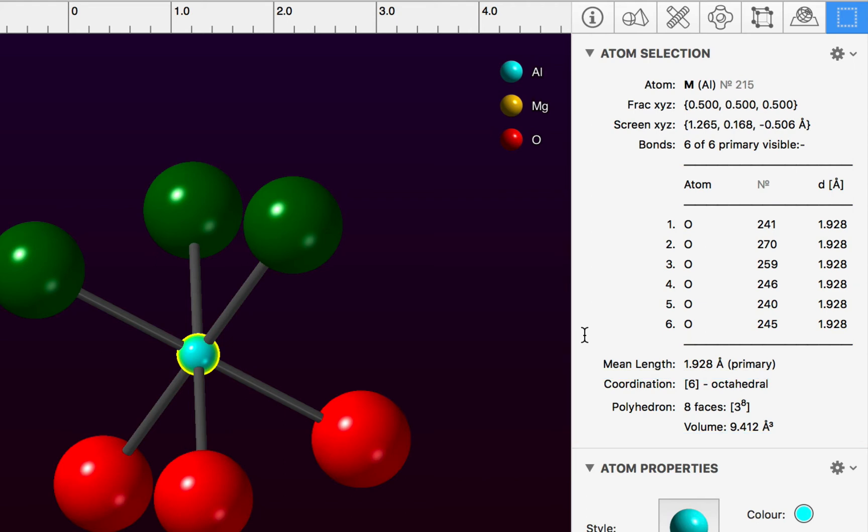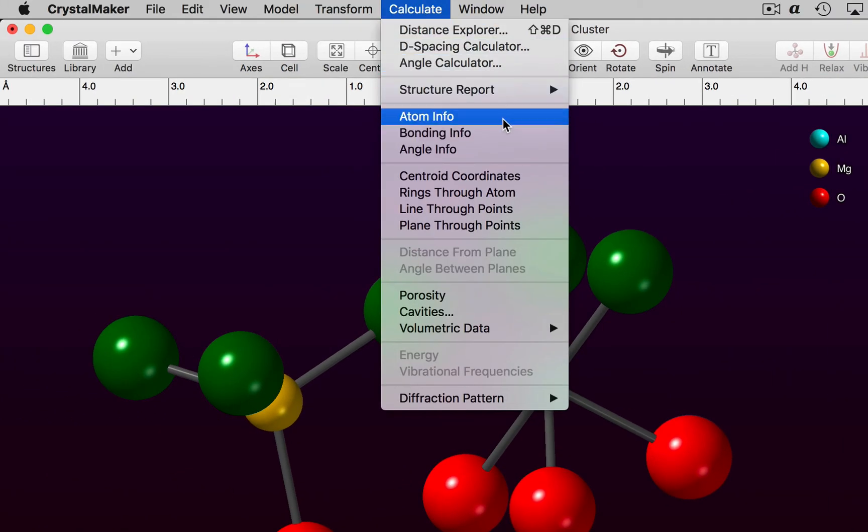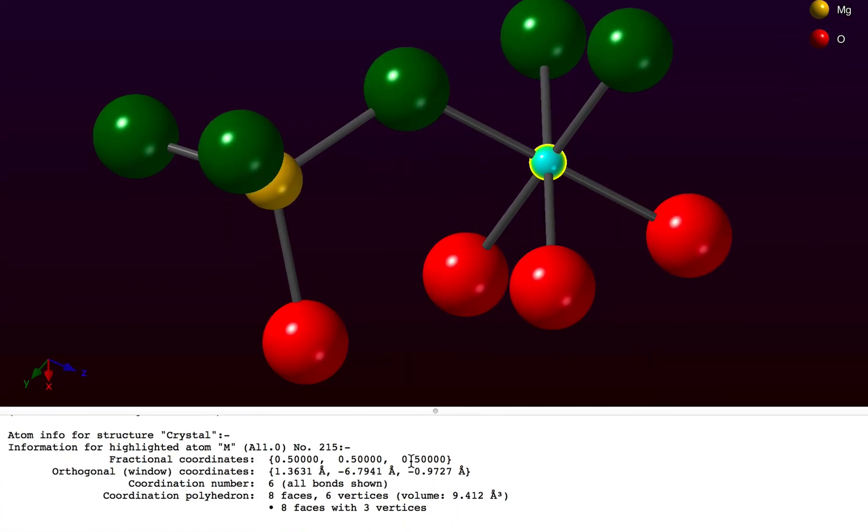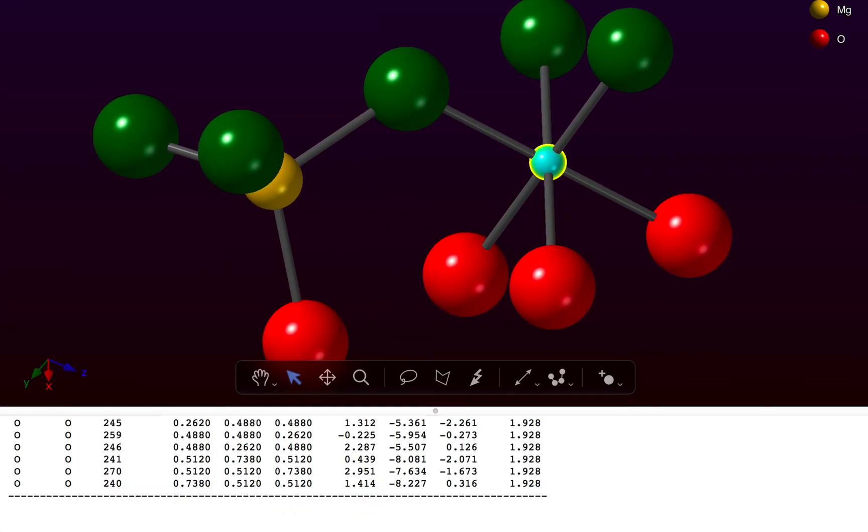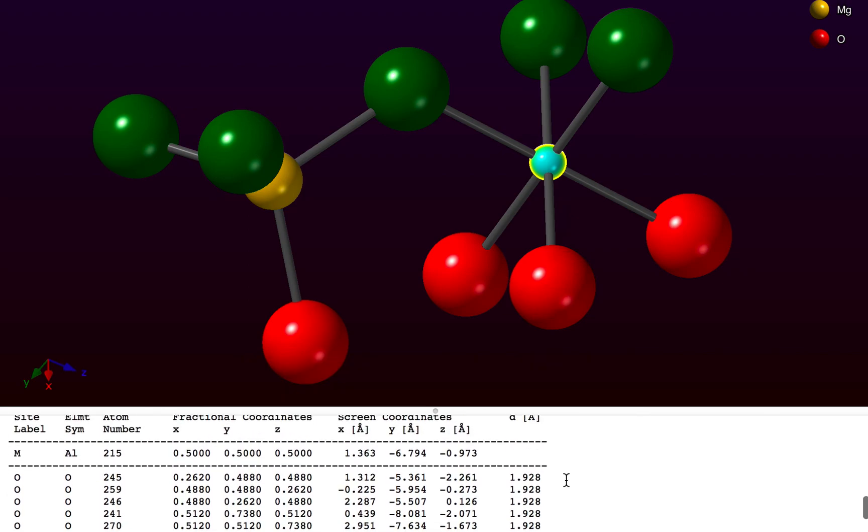Now we can also use the Calculate menu to display information about the atom in the window log. There's the summary in the log which you can copy and paste into another program. We can also summarize bond information for that atom.